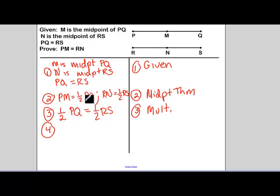Now I can substitute. Now I have an equation where I can substitute one half PQ for PM. So PM is equal to RN. And that is substitution.